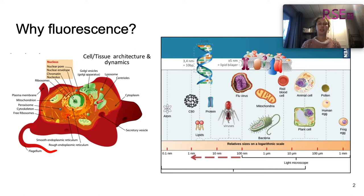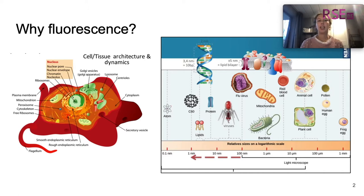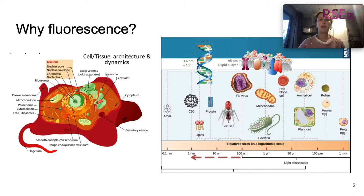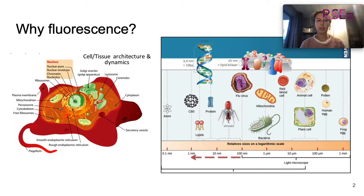Why would you use fluorescence microscopy? When you want to look at a nanometer or micrometer scale at cells, tissue, or organisms in general, we use microscopes. There are several microscope techniques and one of them is fluorescence microscopy. It is particularly interesting because it's a non-invasive technique, which means you won't harm the sample.